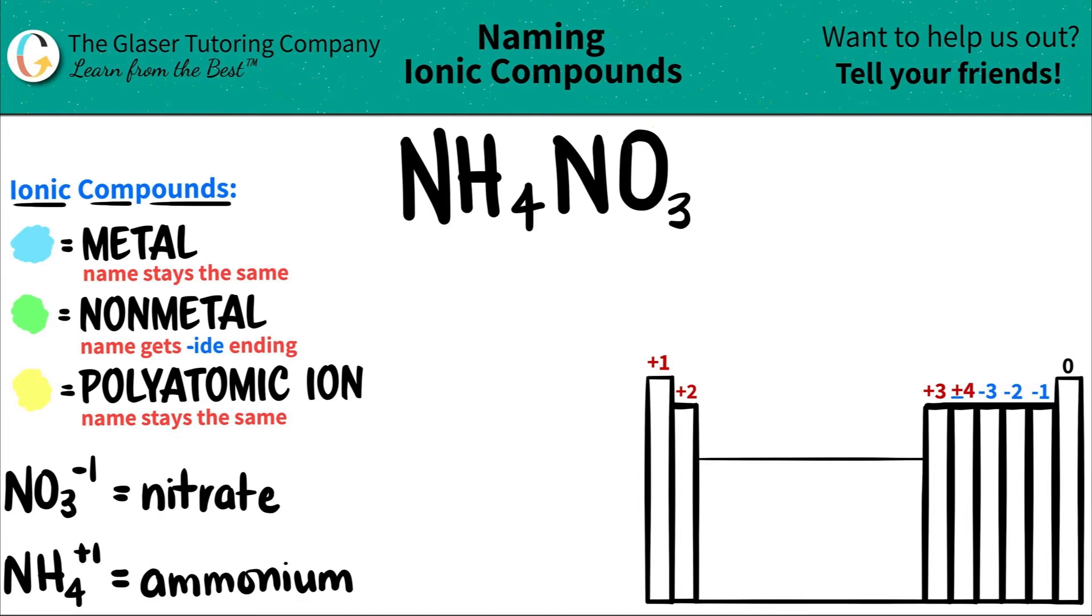In this case, I have NH4. NH4 is always a plus one charge. It loses one electron, and that one's always called ammonium. By memorization, I could say, look at that, I have NH4 right here. Here's NH4. That's a polyatomic.